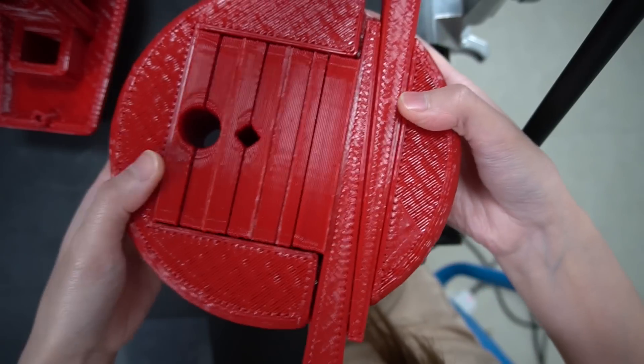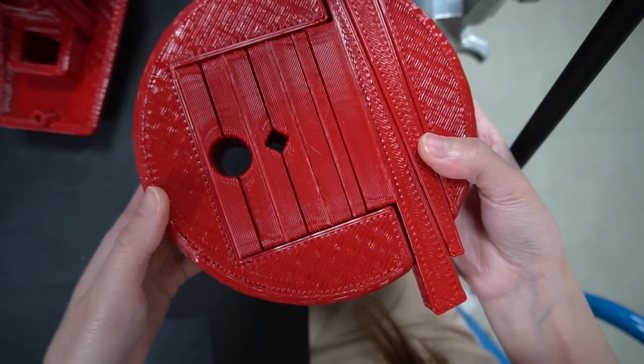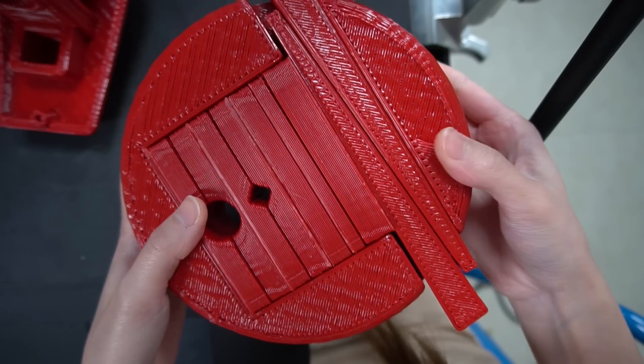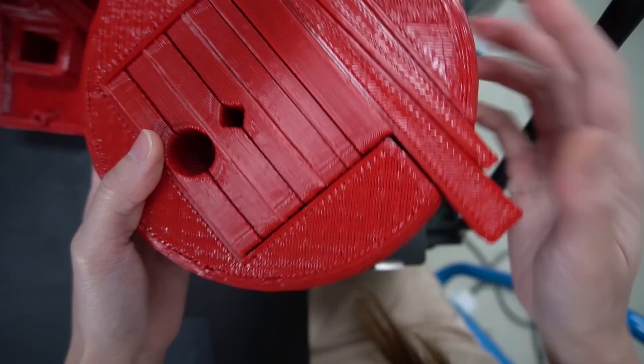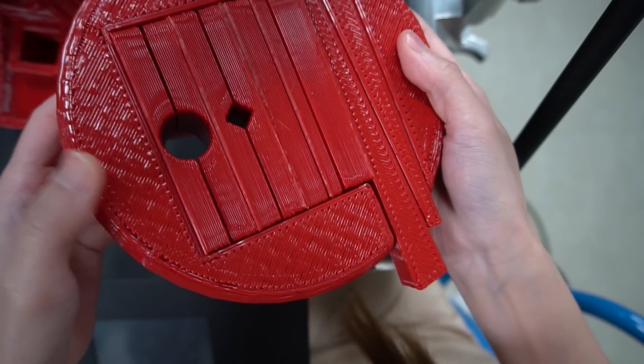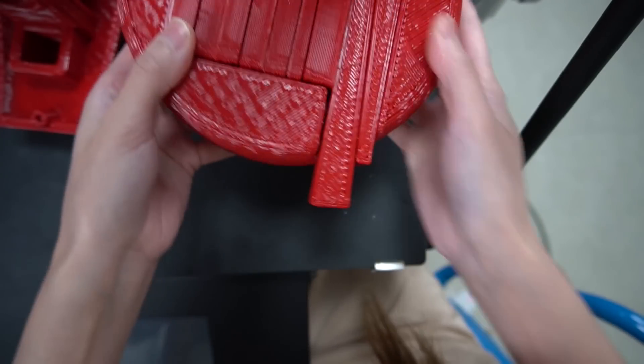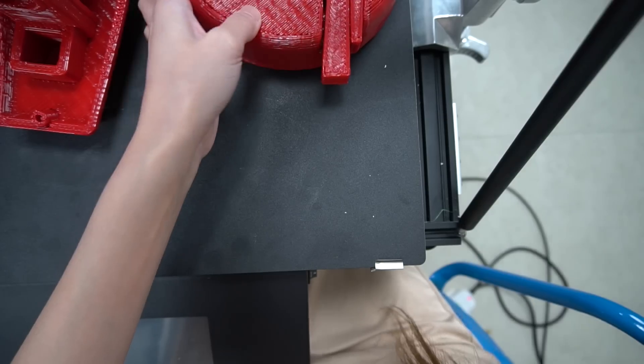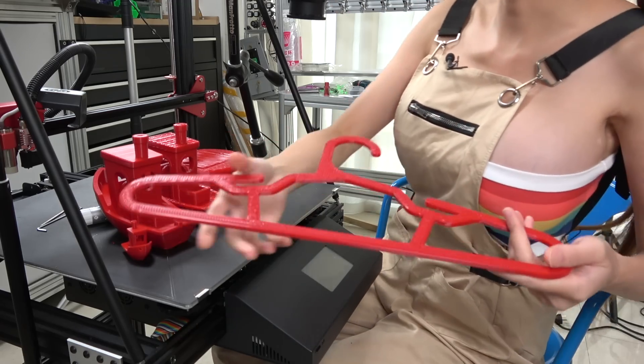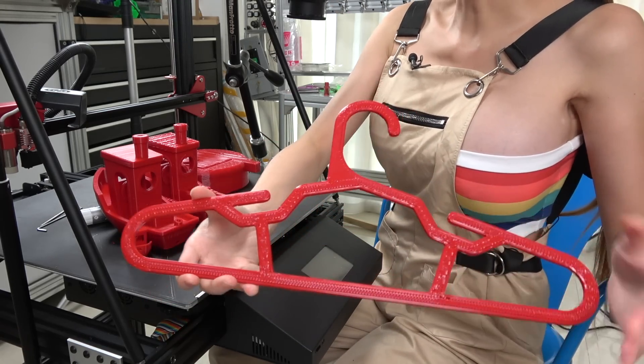It took 7 hours to print, weighs 700g and the same basic design could be used on a small CNC machine and customized to hold any irregular shape. Lastly, here's a clothes hanger.